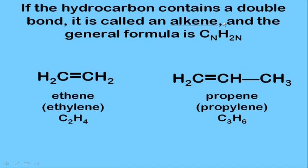Another way to change the structure of a hydrocarbon is to have a double bond. Alkanes end in -ane; these are called alkenes, ending in -ene. There is no methene because you need at least two carbons to make a double bond. Ethene (also known as ethylene) is C₂H₄. With three carbons and a double bond, it's propene, also known as propylene, C₃H₆.